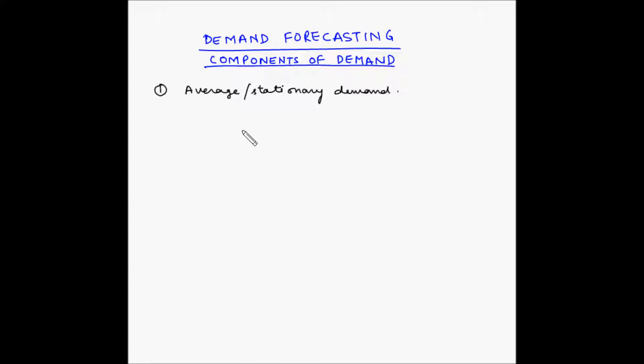The first component of demand assumes that although customer demand per unit time, that is per month, per week, or per year, fluctuates, there is no apparent long-term underlying growth or seasonal trend. If we draw a graph depicting the average or stationary demand, we will have time on the x-axis and quantity of demand on the y-axis. So this average or stationary demand will be something like this. It has very less fluctuations but overall it is stationary.